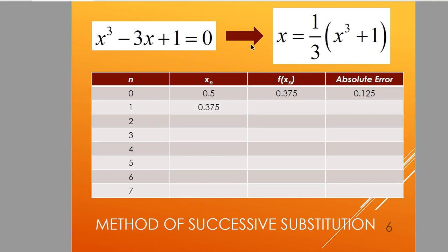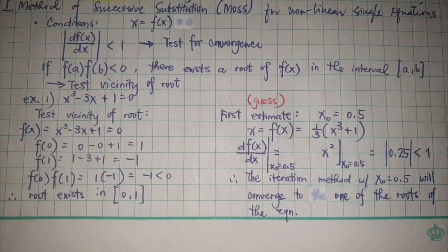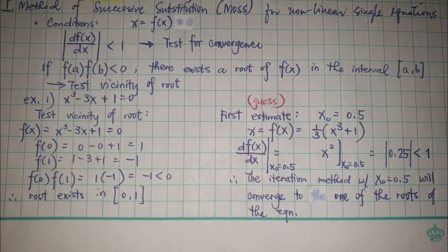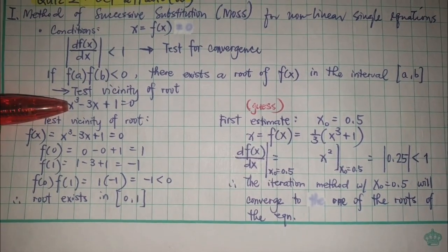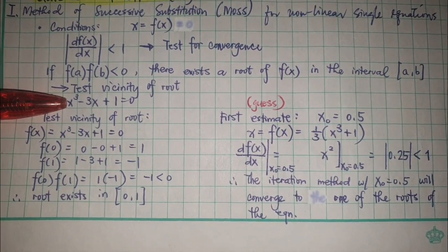In this case, it would be easier for me to isolate the x of the second term because it's linear. If I were to isolate that x, that's going to be x = 1/3(x³ + 1).